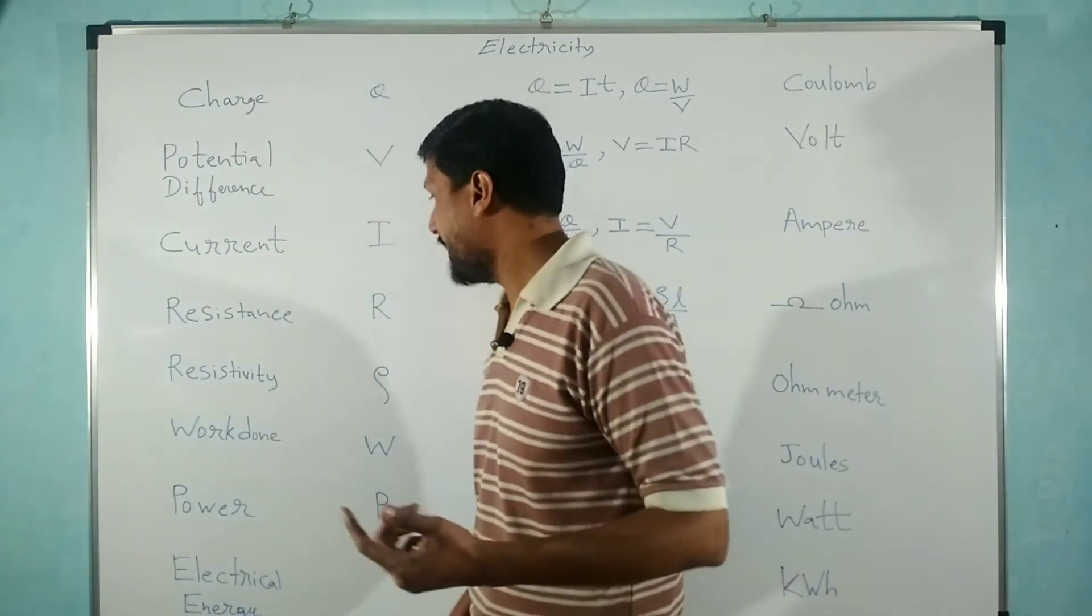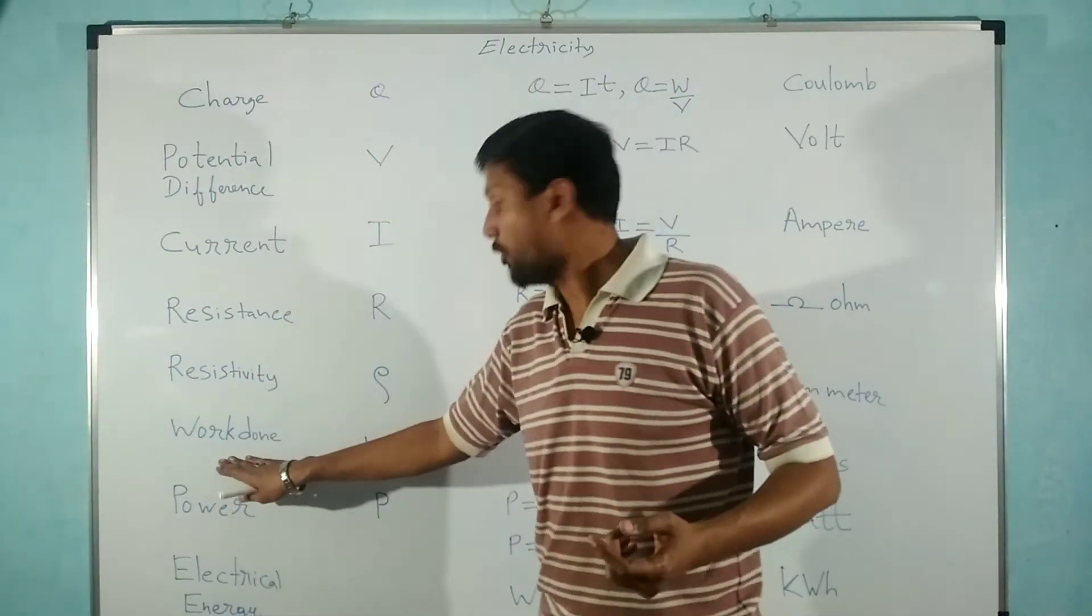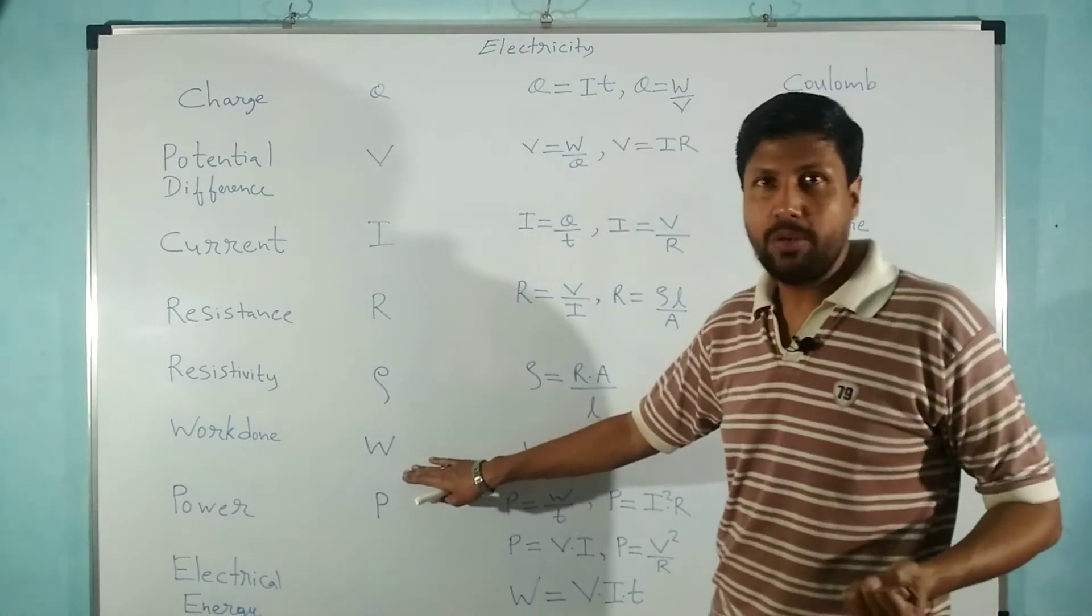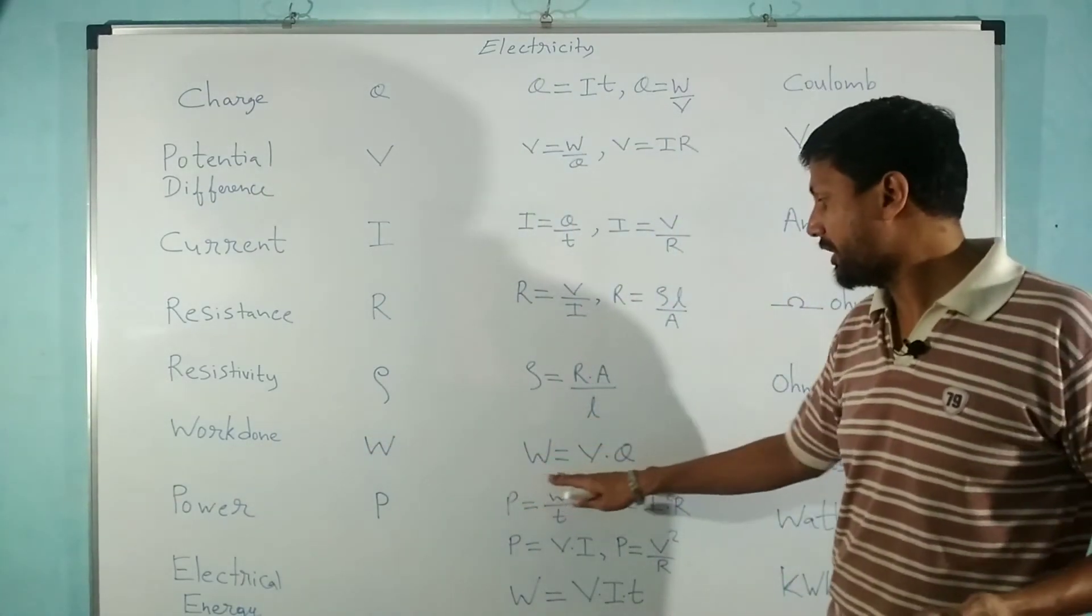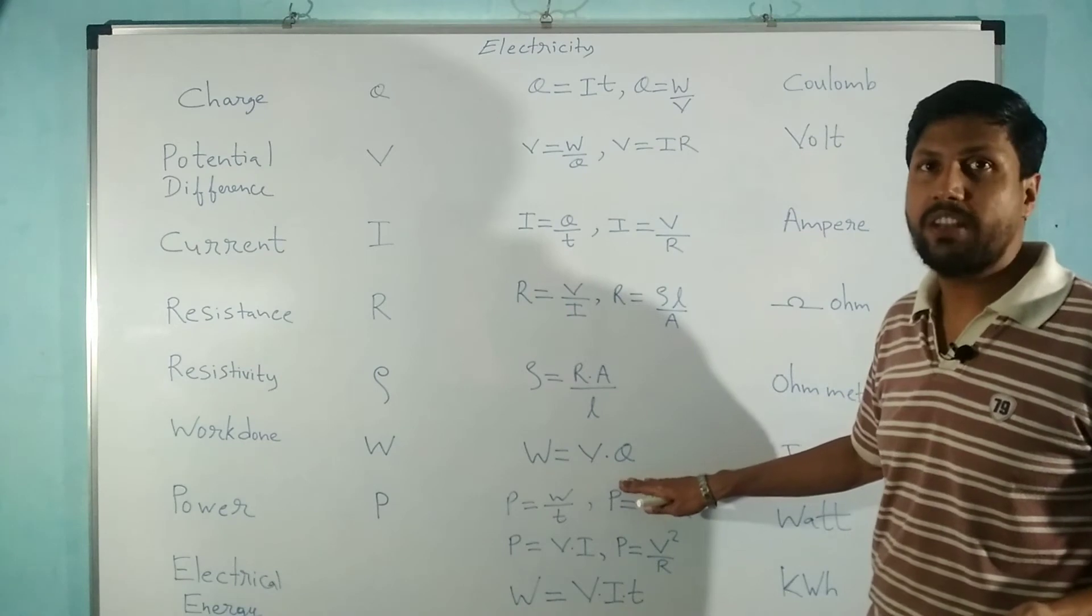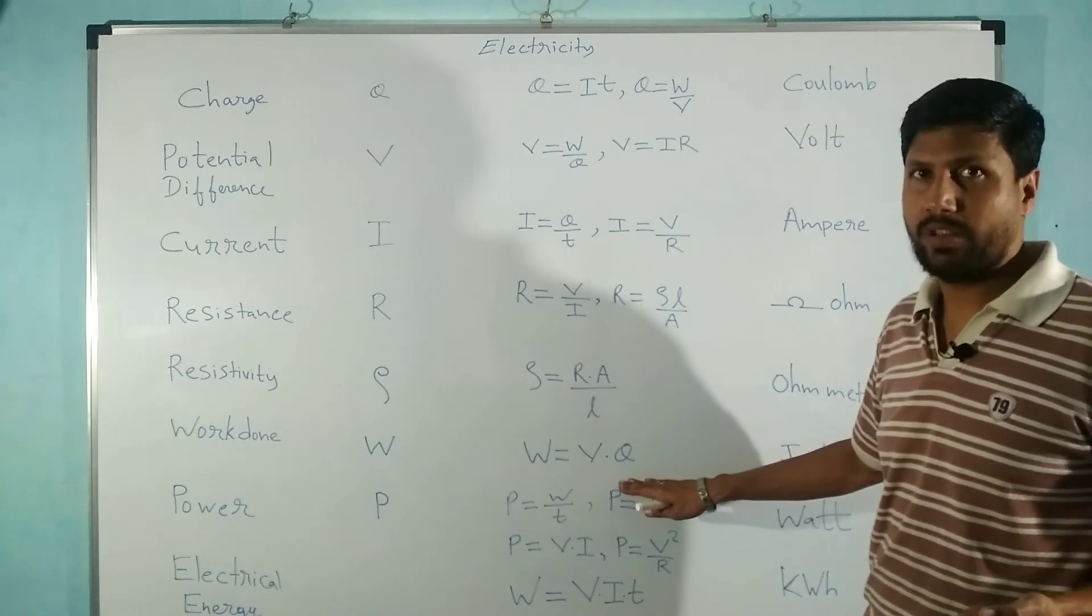The next physical quantity is work done, represented by capital W. Its formula is W equals V times Q, which comes from the definition of potential difference. The unit of work done is joules.